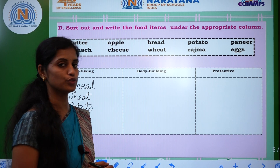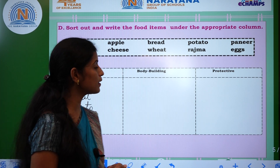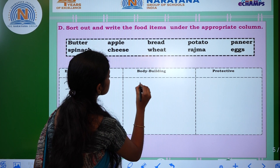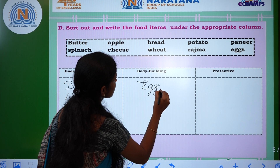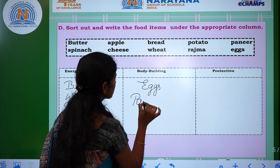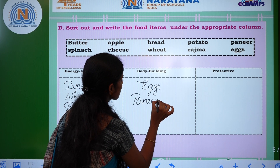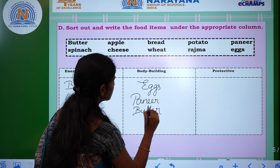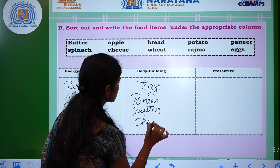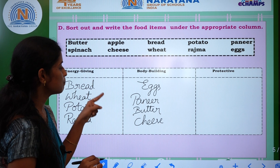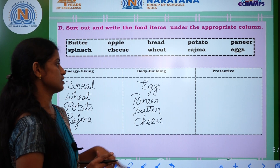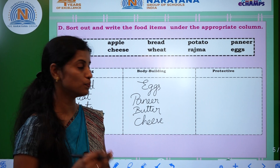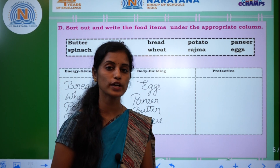Second one is body-building food. We can find out which food items are body-building food. Eggs, paneer — P-A-N-E-E-R — paneer, butter — B-U-T-T-E-R — butter, and cheese — C-H-E-E-S-E — cheese. Eggs, paneer, butter, and cheese are all concerned with body-building food. You know, butter and cheese are also considered fat food items, but they are most helpful for our body-building process.